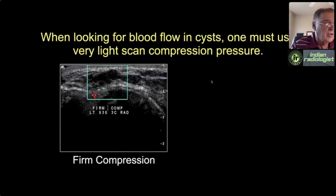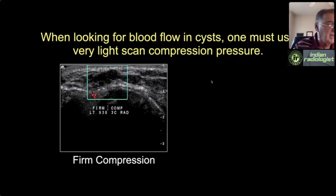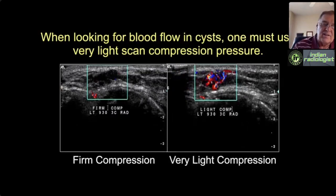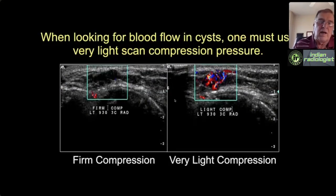An important caution: if you use too much scan pressure, you can create false negatives by shutting the tumor vessels off. Tumor vessels don't have muscular or elastic walls and are easy to compress. Here, just letting the weight of my arm rest on the transducer gives a false negative. On the right, consciously lifting up on the probe so I'm barely touching the skin—you can see tremendous vascularity. So if you're going to use Doppler and want to minimize false negatives, you must use very light scan technique. The literature hasn't emphasized this enough.